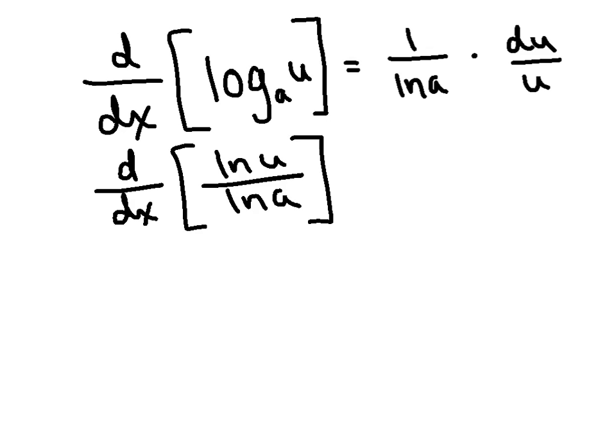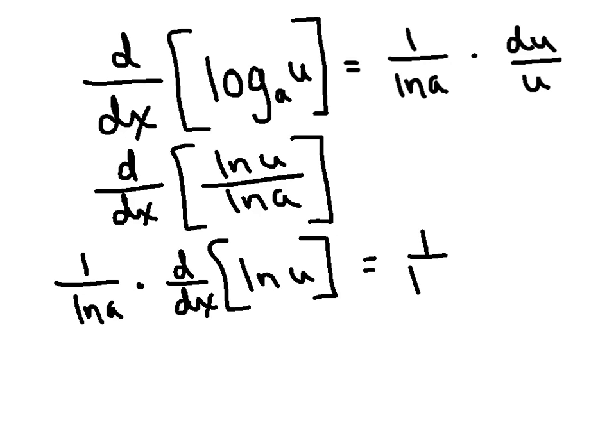The natural log of A is a constant, so I can pull it out. So I've got 1 over the natural log of A times the derivative of the natural log of u. Oh, look at that. We know that. And so we've got your coefficient, 1 over the natural log of A, times du/u. So it's very similar with just an extra little coefficient in front of it.